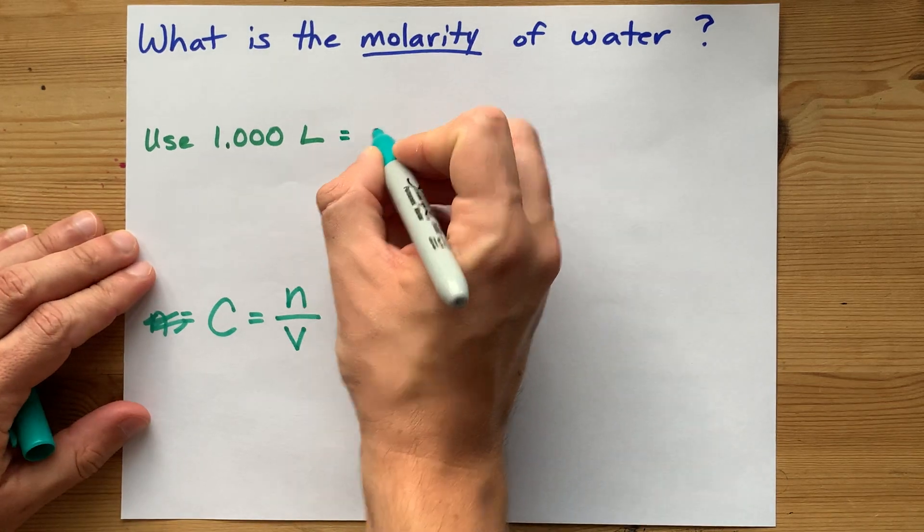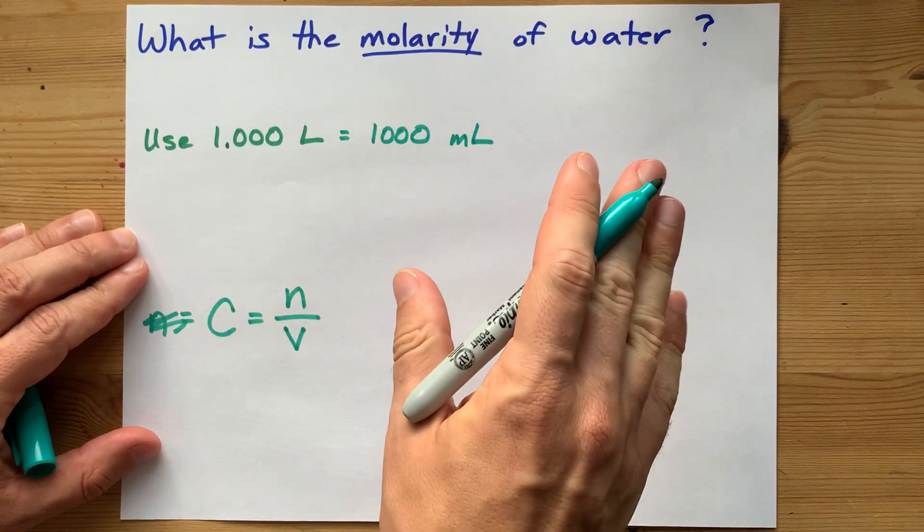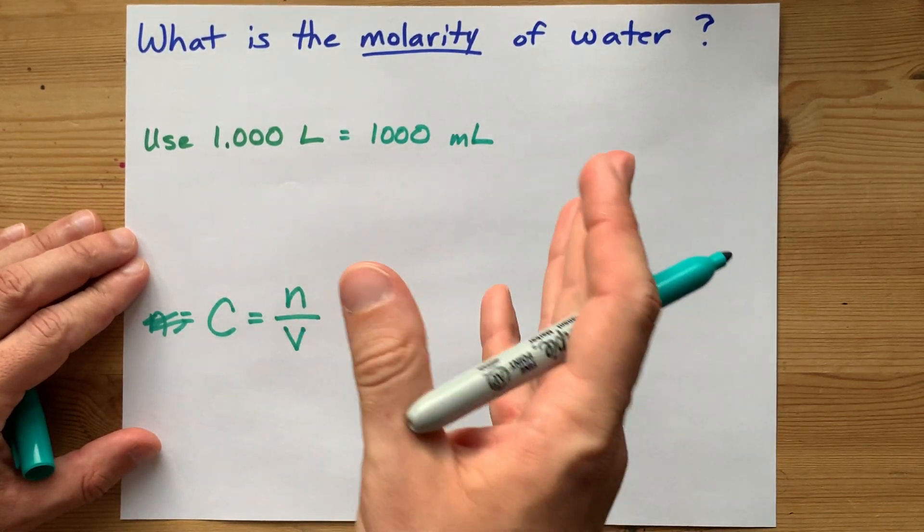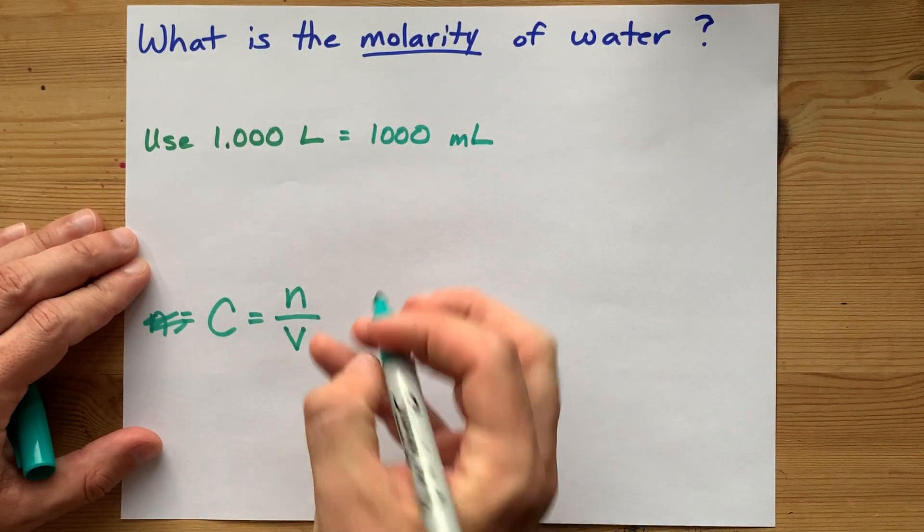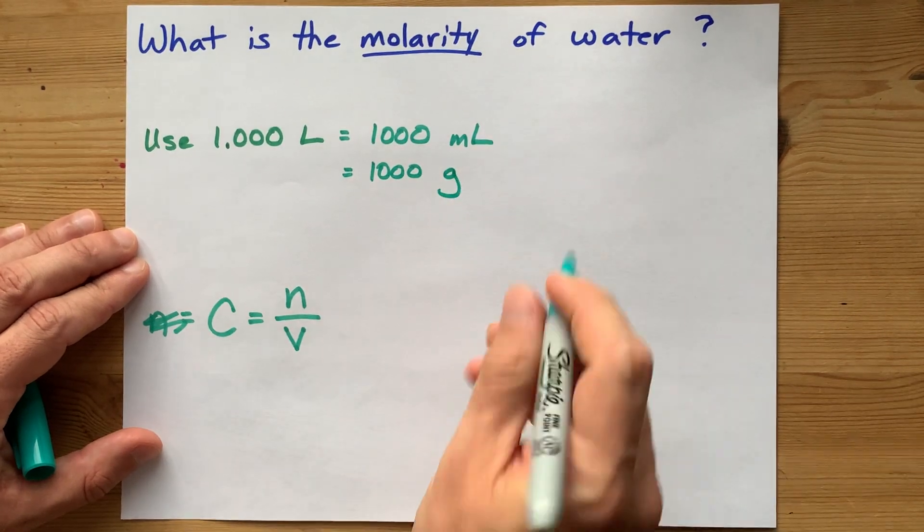then you probably know that that's 1,000 milliliters. And because of the way water is at room temperature-ish, that ends up being equivalent to 1,000 grams of water.